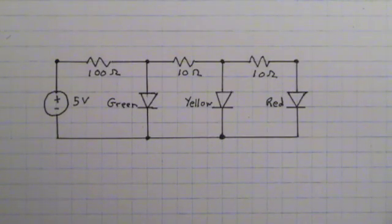Here we see a circuit with three light emitting diodes - one green, one yellow, one red. There's also three resistors and a 5 volt voltage source.